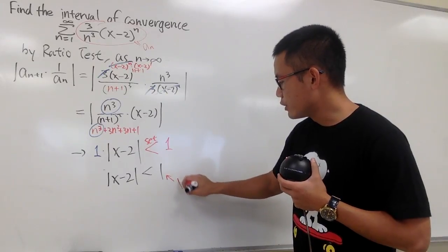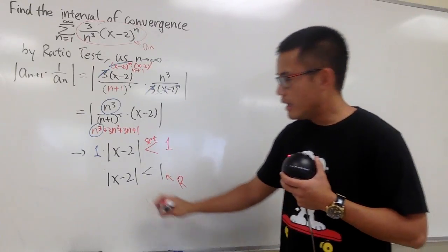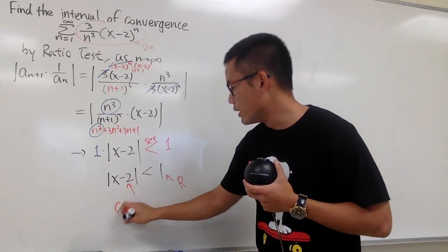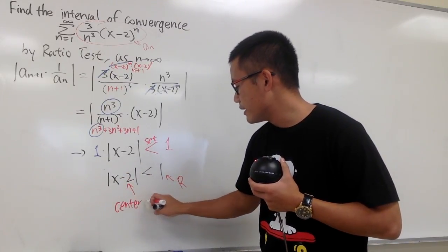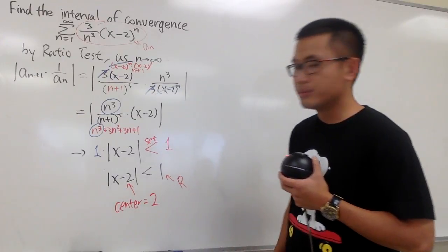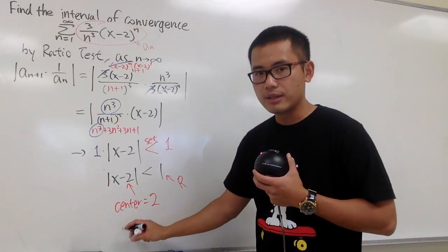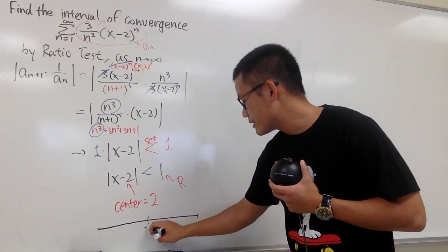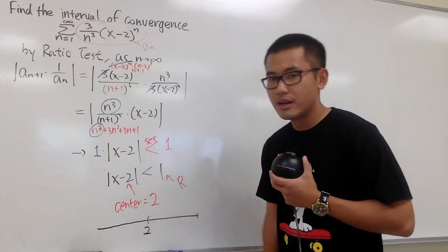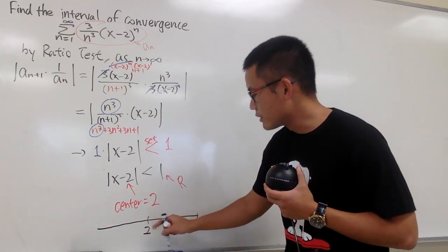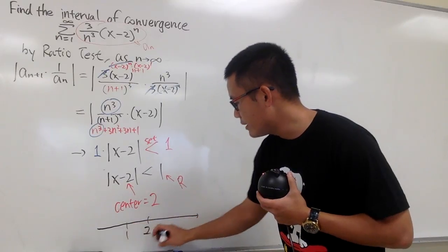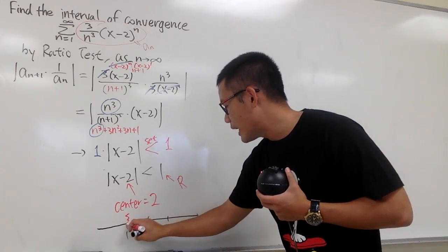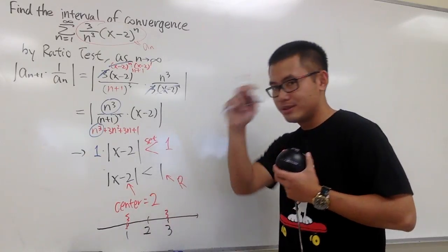With this being done, the radius of convergence is 1. And in this case we have x minus 2, so the center is at positive 2. So I can draw the number line: center is at 2, we move to the left one time which gives us 1, and we move to the right one time which gives us 3. But I don't know what will happen at the endpoints, so let me check those.